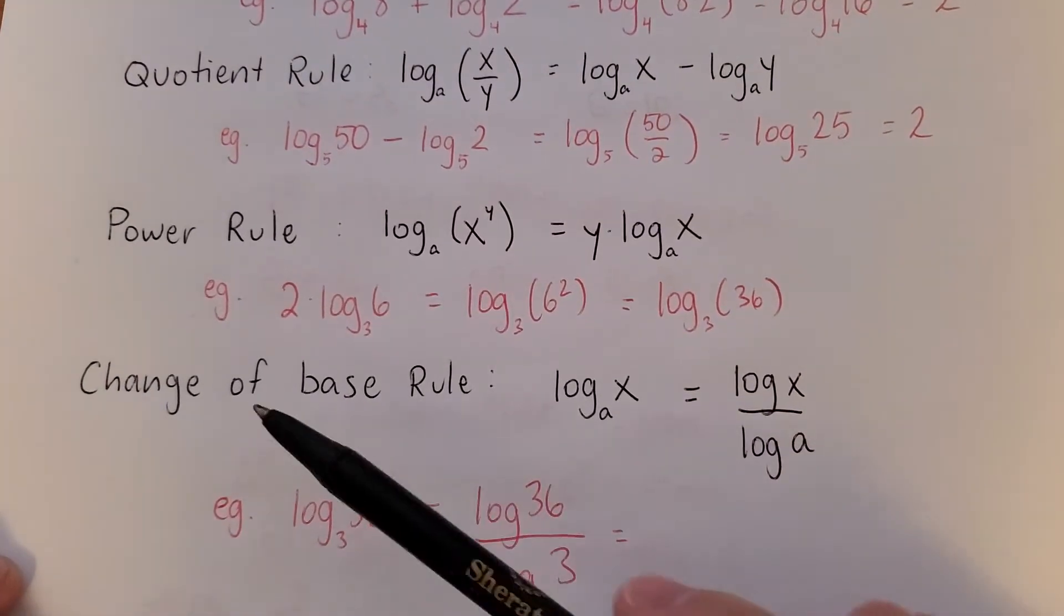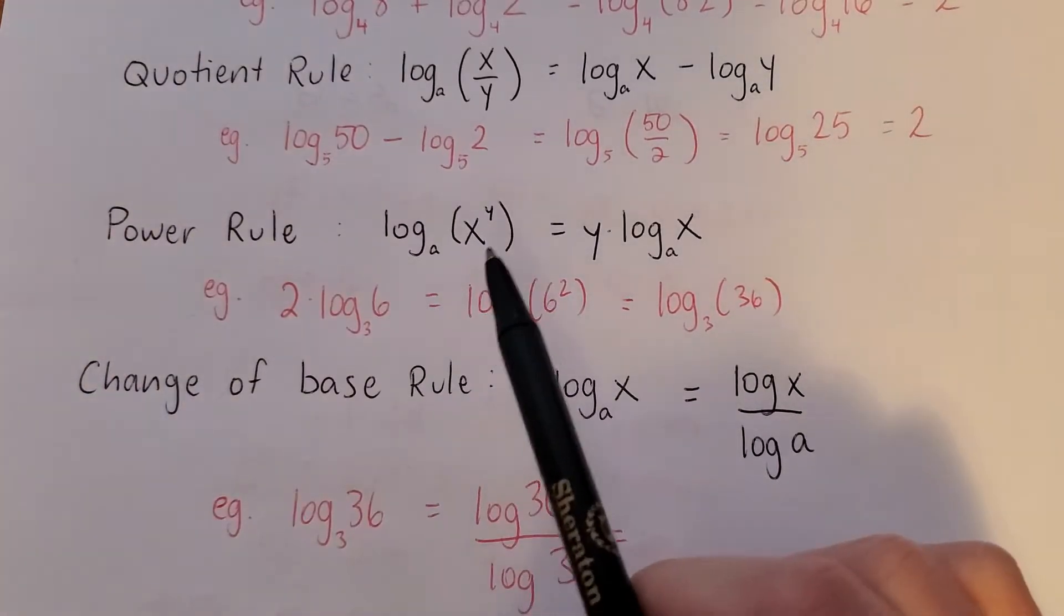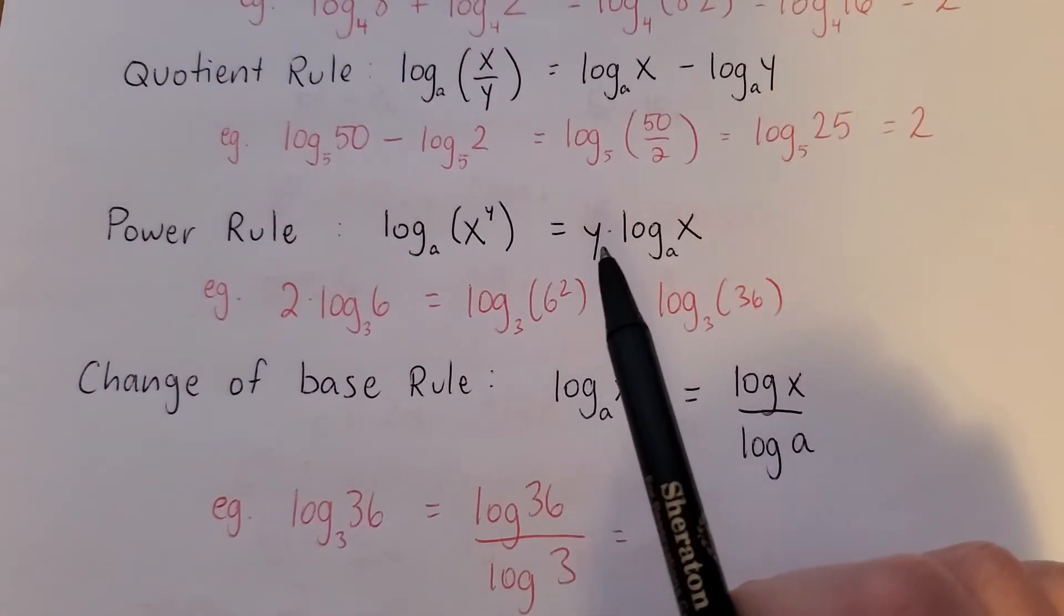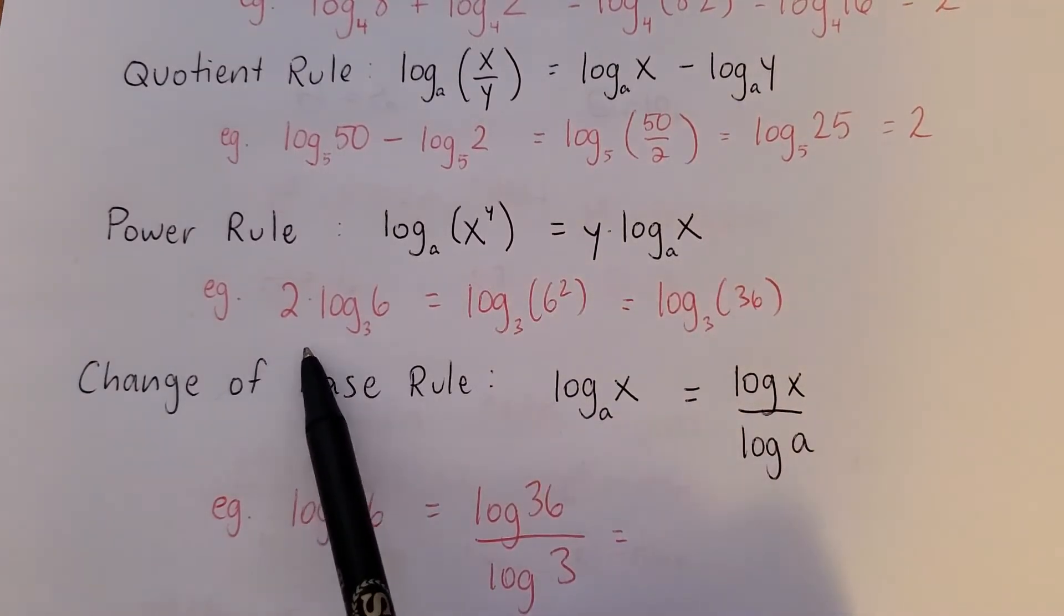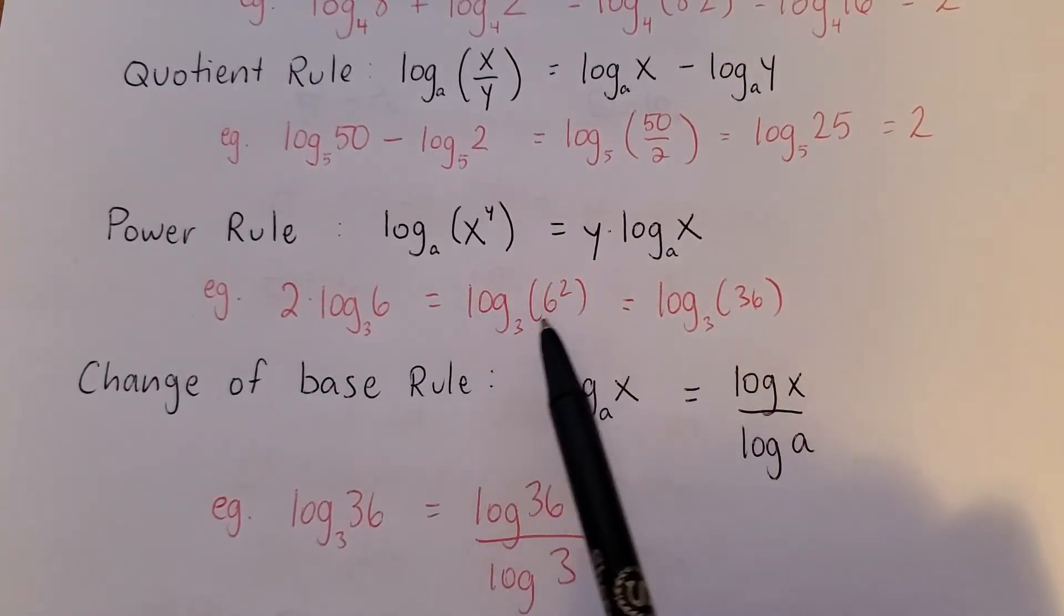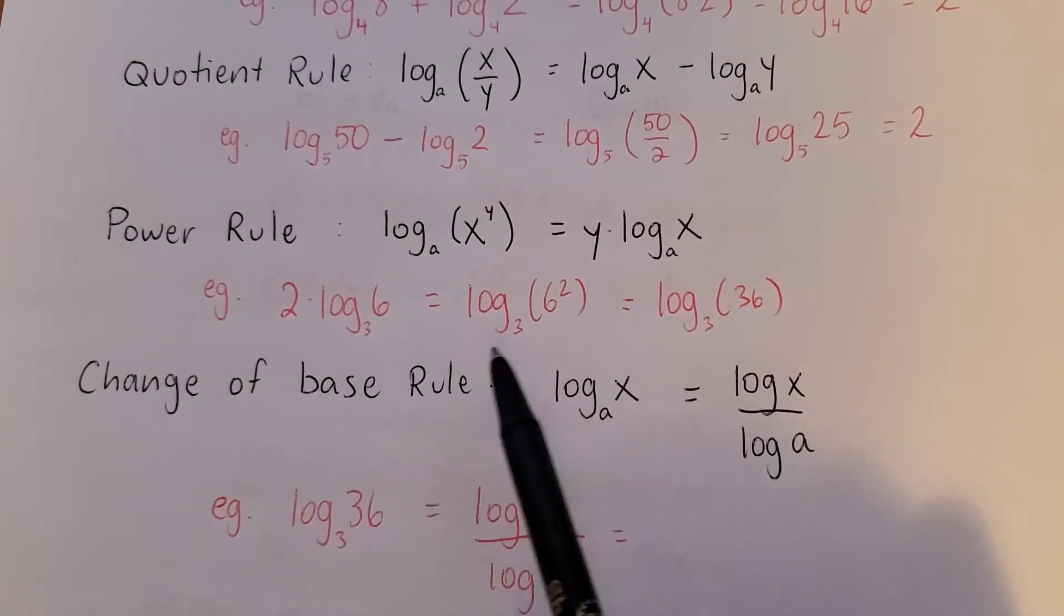Power rule. This one you won't use nearly as much. If you're taking the log of something raised to a power, the power can actually be brought in front and multiplied by the log. So 2 times a log is equal to the log of something to the power of 2. Okay, so 2 log 6 equals log of 36.